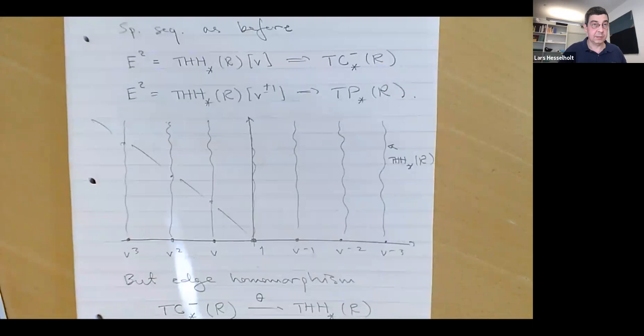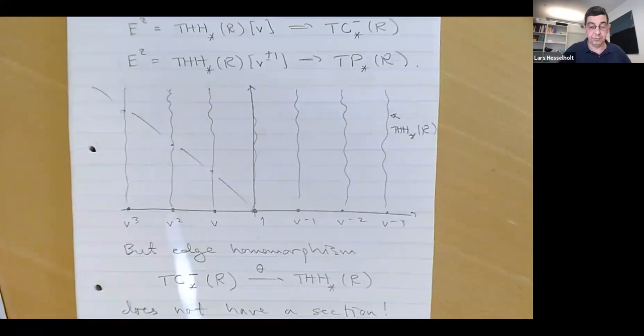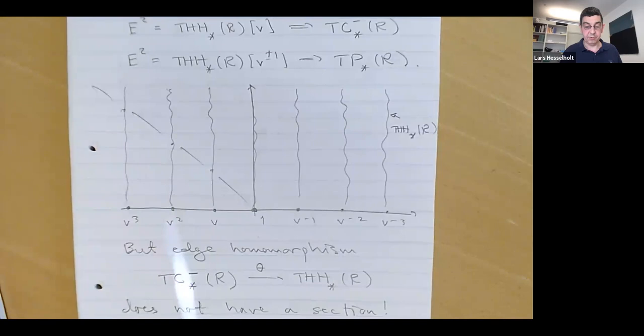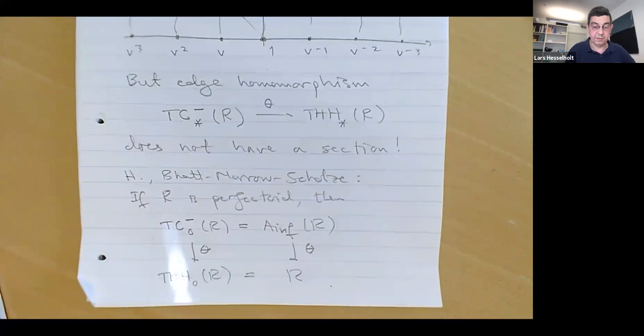Unlike Bott periodicity, we do not have many proofs of Bökstedt's theorem. Bhatt was speaking at the conference for Illusie and said there's now a new proof, which I look forward to hearing. All proofs so far use the action of the Dyer-Lashof algebra on the dual Steenrod algebra, which is a non-trivial calculation, and it would be nice to find a proof that doesn't use that. This is the starting point of the calculation.